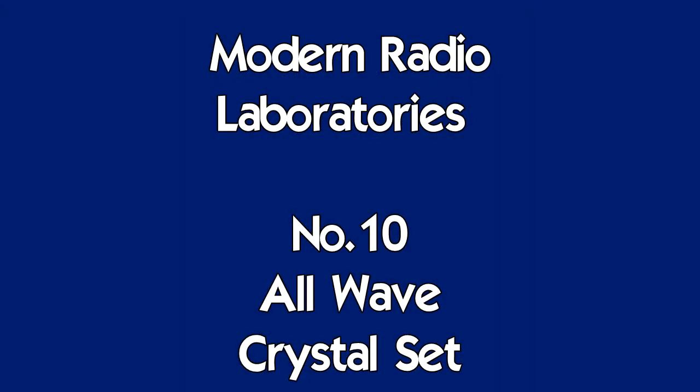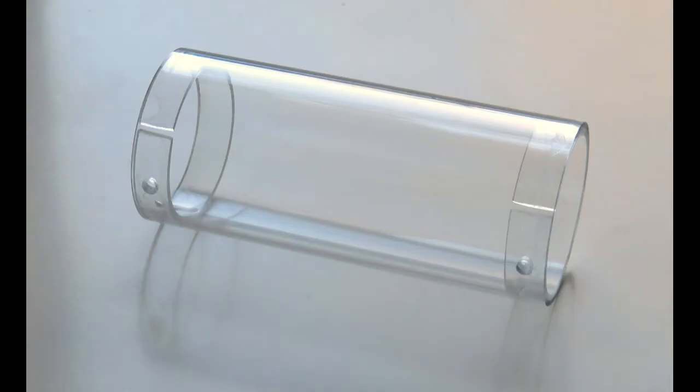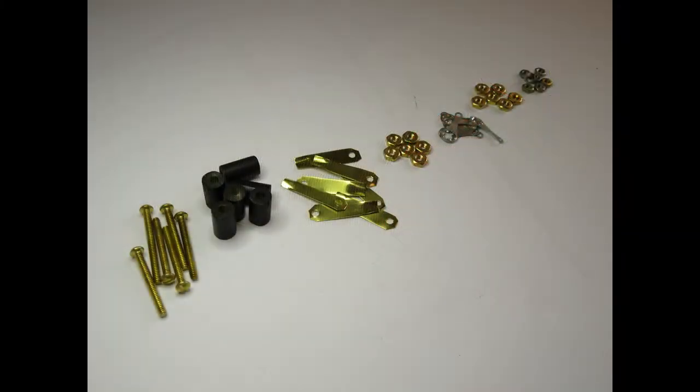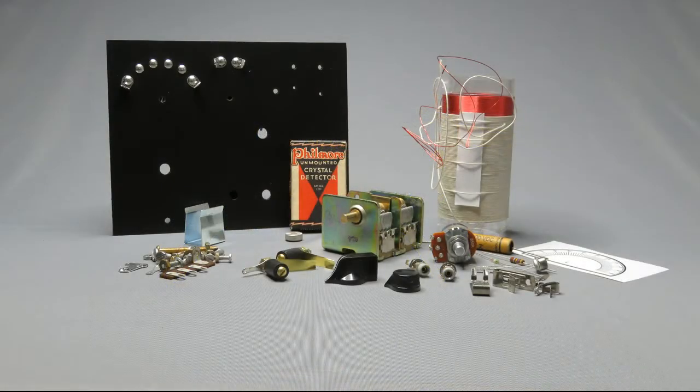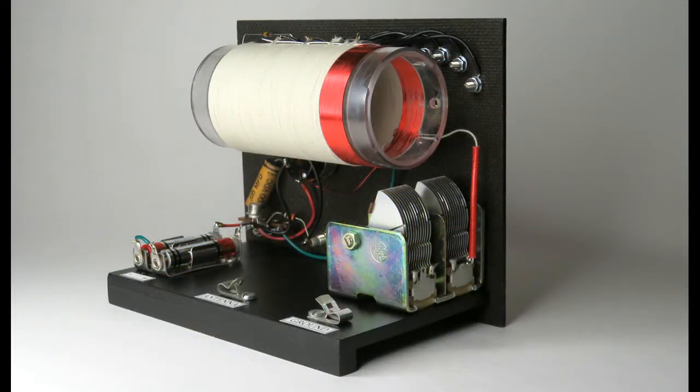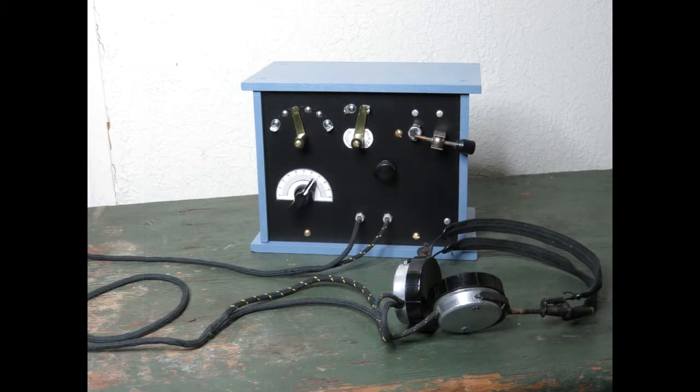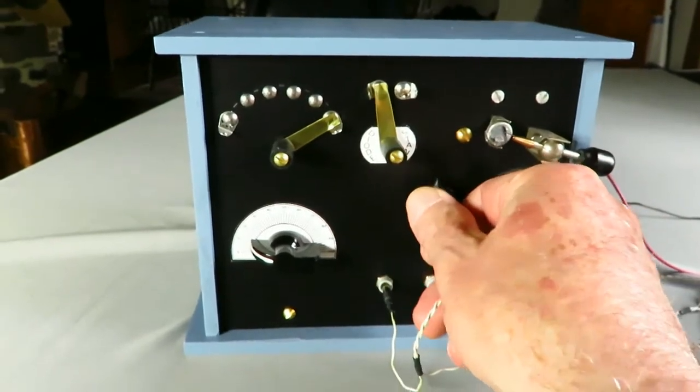And now for some old music. You would normally use a set of headphones to listen to this radio, but for the video we'll be using an external amplifier. The antenna is about 50 feet of wire that goes out the window and it's tied off to a tree.